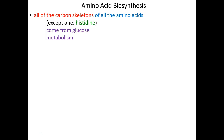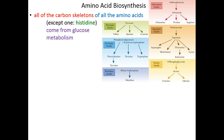All of the carbon skeletons of all the amino acids — that is, all of the non-amino group portions — except for histidine, come from glucose metabolism. Glutamate, glutamine, proline, and arginine all come from alpha-ketoglutarate, part of the citric acid cycle. Aspartate, asparagine, methionine, threonine, isoleucine, and lysine all come from oxaloacetate. Serine, cysteine, and glycine all come from 3-PG. Phenylalanine, tyrosine, and tryptophan all come from PEP, phosphoenolpyruvate. Valine, alanine, and leucine all come from pyruvate directly.